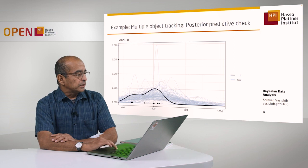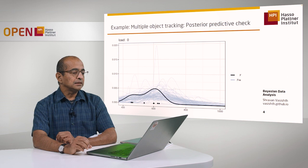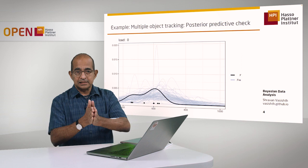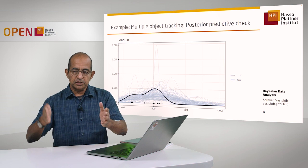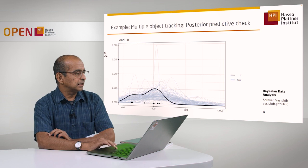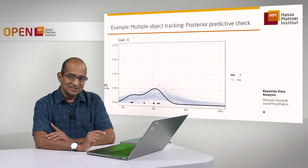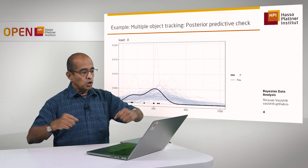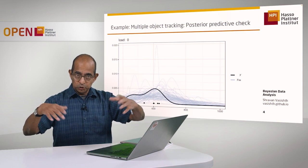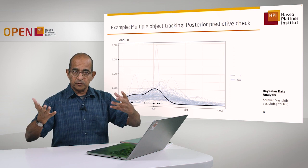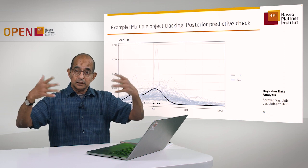One other interesting thing you can do with this model is study what it would predict for future data. In this experiment design, we have attentional load levels of 0, 1, 2, 3, and 4 — five levels in total. Having fit the model and obtained posterior distributions for each parameter, we can generate new data repeatedly using those posteriors. What we get from the model is simulated datasets that represent what the model predicts future data would look like.